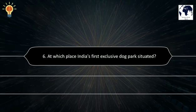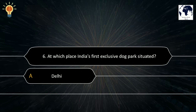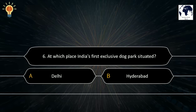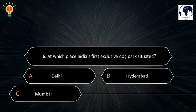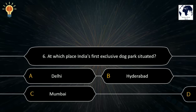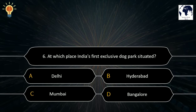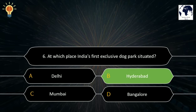Question number 6. At which place is India's first exclusive dog park situated? A. Delhi. B. Hyderabad. C. Mumbai. D. Bangalore. The correct answer is B. Hyderabad.